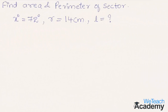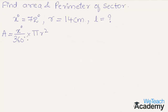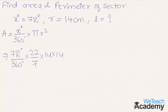Let us solve an example: find the area and perimeter of sector when x equals 72 degrees and R equals 14 centimeters. Area of sector equals x degrees divided by 360 into pi R squared. Substituting: 72 divided by 360 into 22 by 7 into 14 into 14. Simplifying — 7 goes once into 7, and 7 goes twice into 14 — we get 123.2 square centimeters as the area.